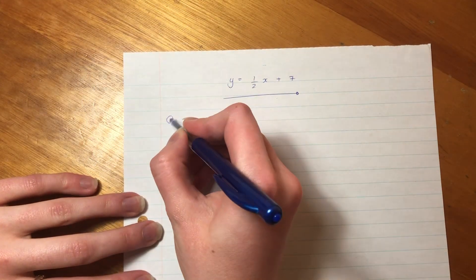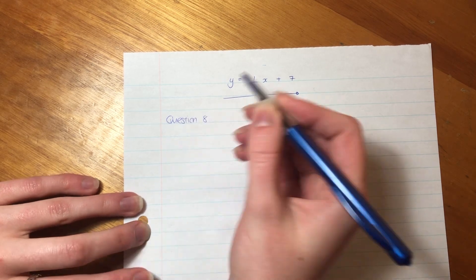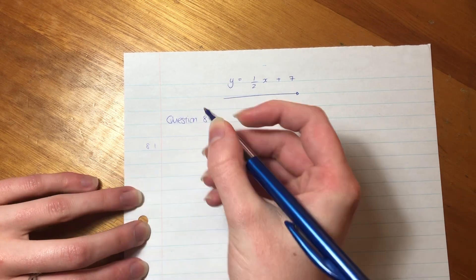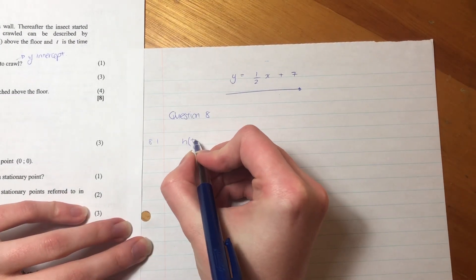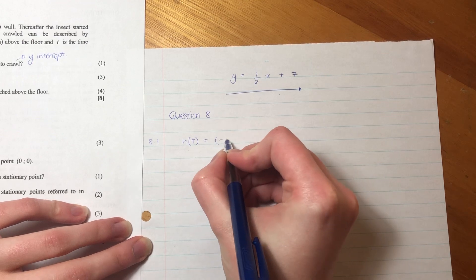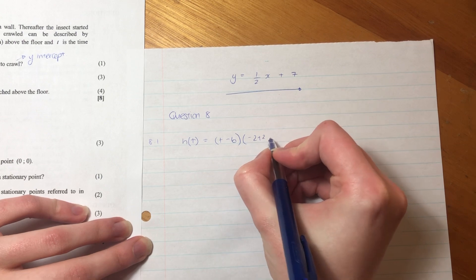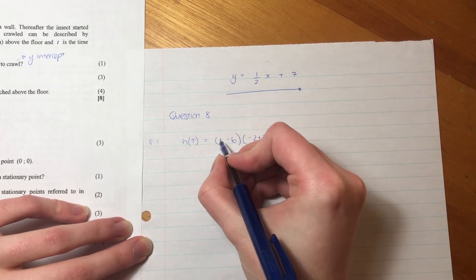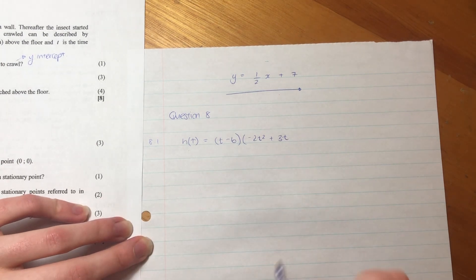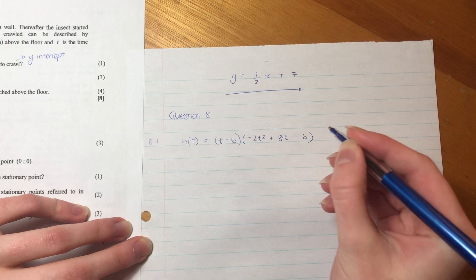So let's give them what they want. Question eight, 8.1. Let's write out this cubic graph. So we have H of T equals T minus 6, minus 2T squared plus 3T. You might want to give your T's like a little tail or something so you can differentiate them from the pluses because you don't want to mix those up. Minus 6.